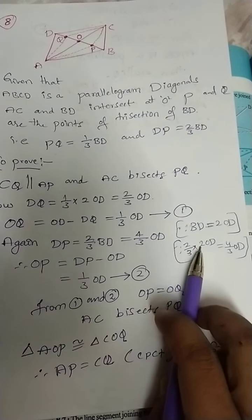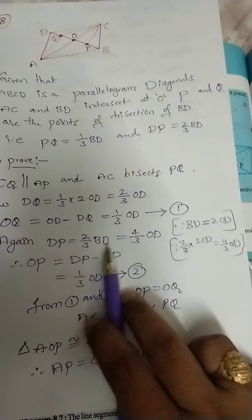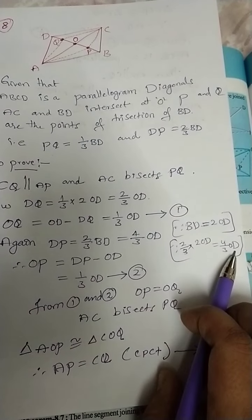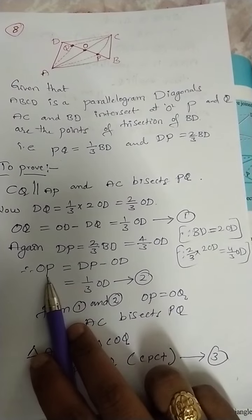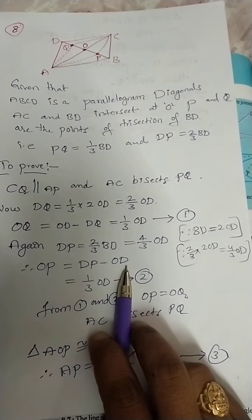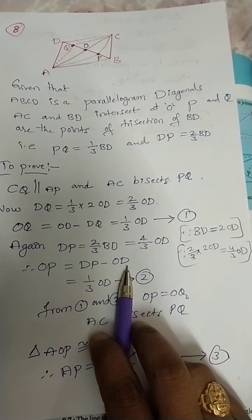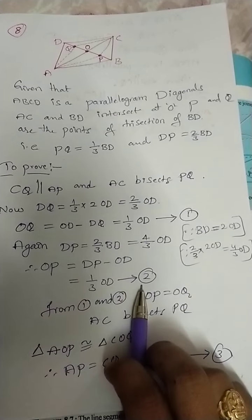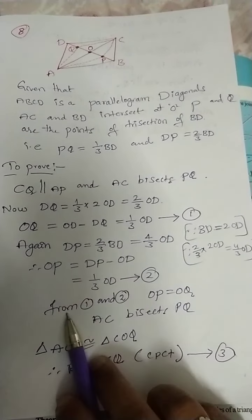So 2/3 BD equals 4/3 OD. Now OP equals DP minus OD. Now 1/3 OD. Let us say equation 2.